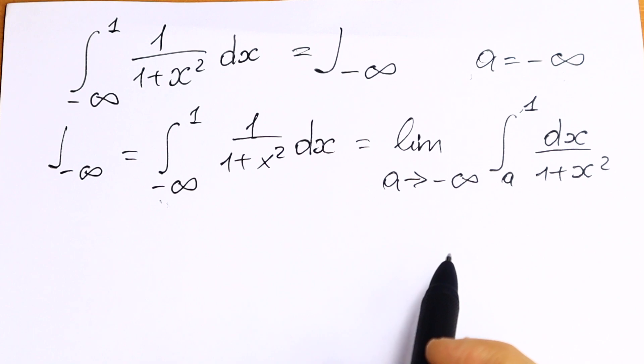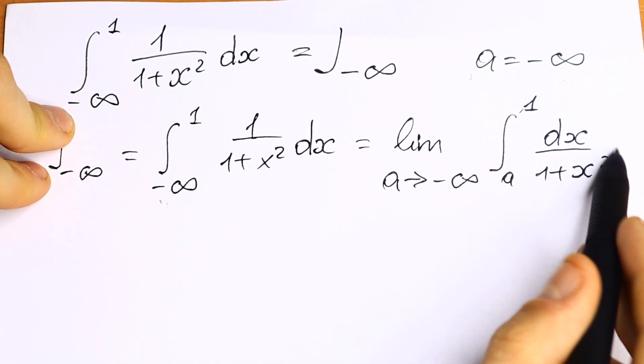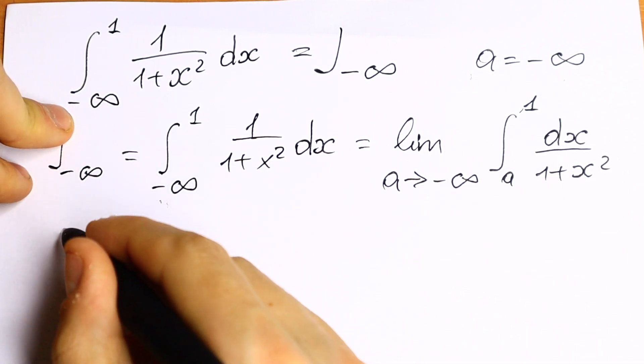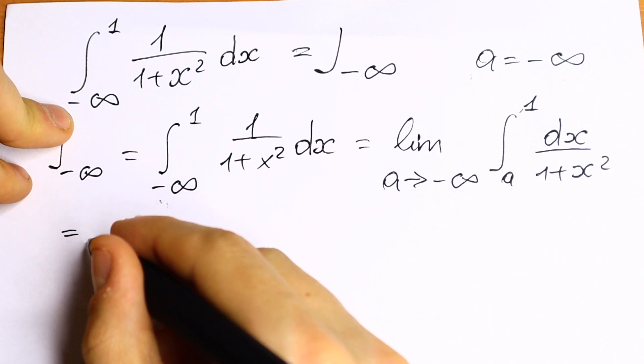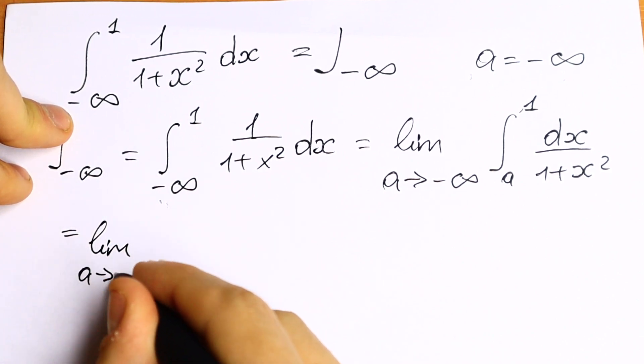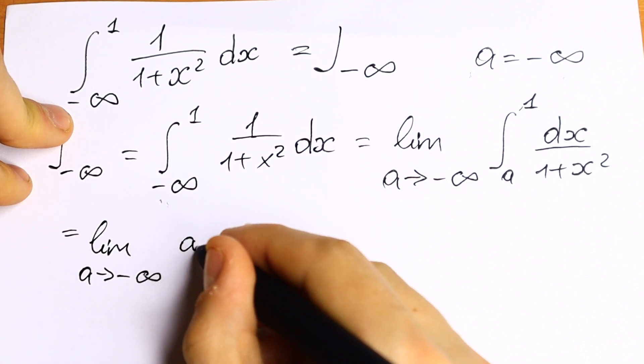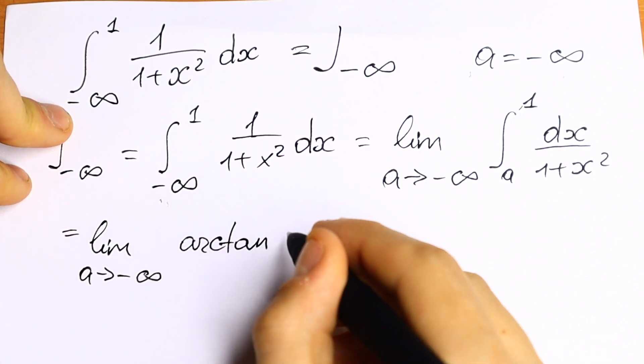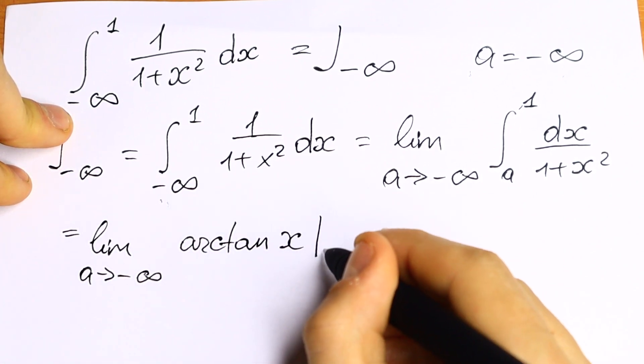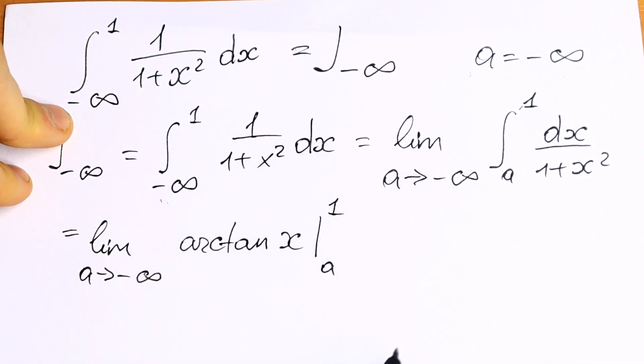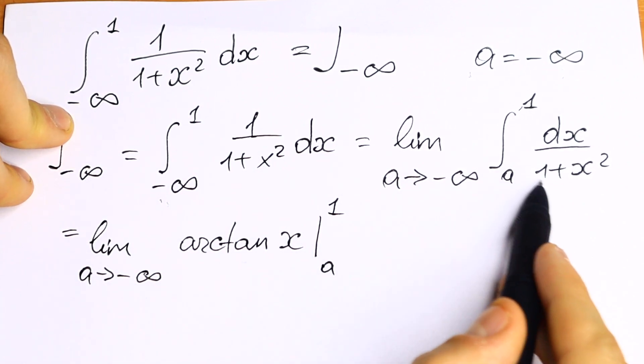So what we're going to do next? Take a look. This is a classic arctangent integral. So we can write this one as limit as a approaches to minus infinity of arctangent x evaluated from a to 1.